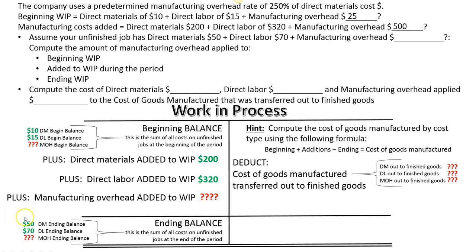Now do the same thing for the ending balance. If the unfinished job has $50 of direct materials and $70 of direct labor in it, I can solve for how much overhead should have been applied in this ending balance. We had some overhead, added some more, took some out — what's leftover is $50 of direct materials times 250%, which equals $125.